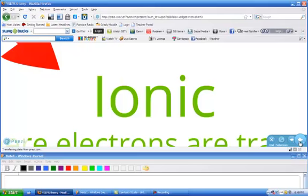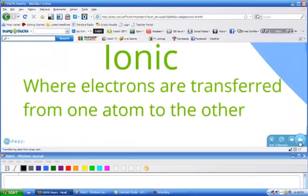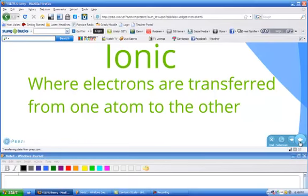They are ionic, which of course is where electrons are transferred from one atom to the other. In an ionic bond, the difference in electronegativity is very large, and so one atom gains electrons and one atom loses electrons, and therefore they form ions. That's one type of bonding.